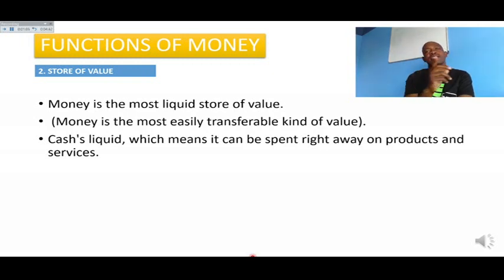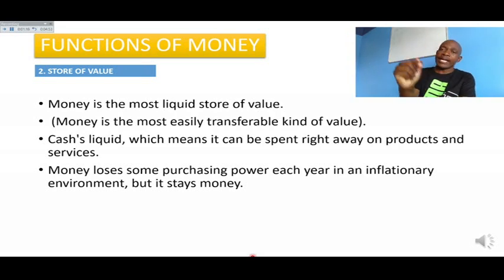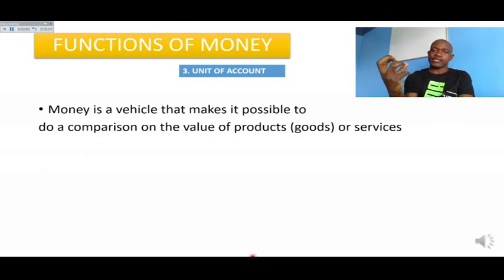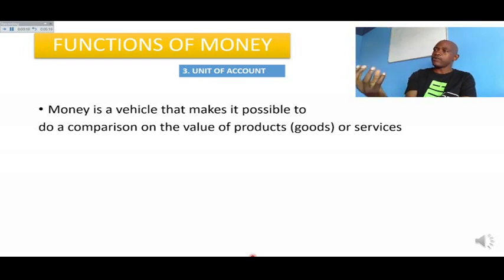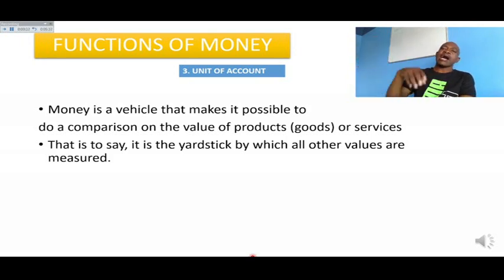Money loses some purchasing power due to inflation. Number three: unit of account. Money is a vehicle, a tool that makes it possible to compare the value of goods and services. We can compare the value of bread and the value of sugar in terms of money. It is a yardstick by which all other values are measured.